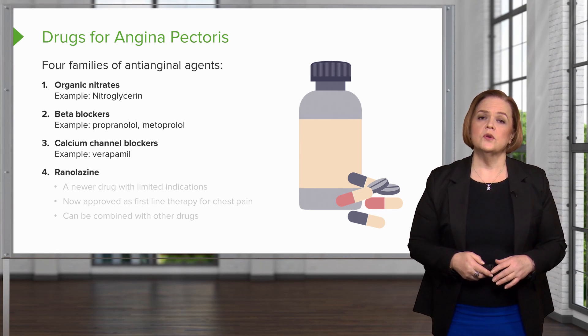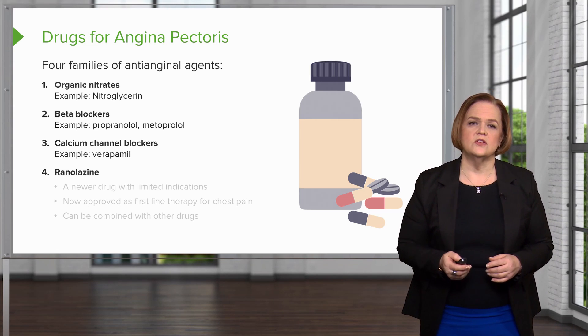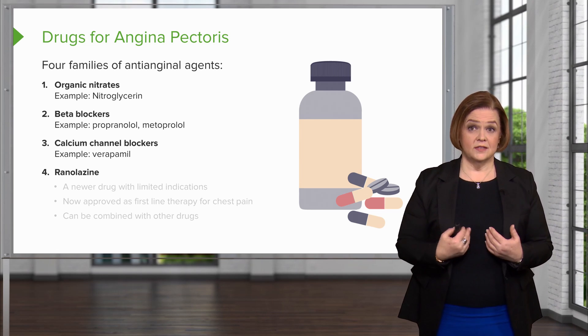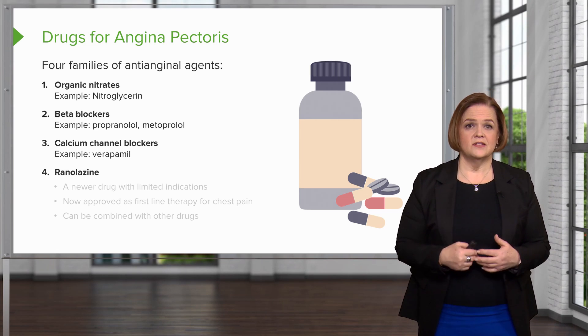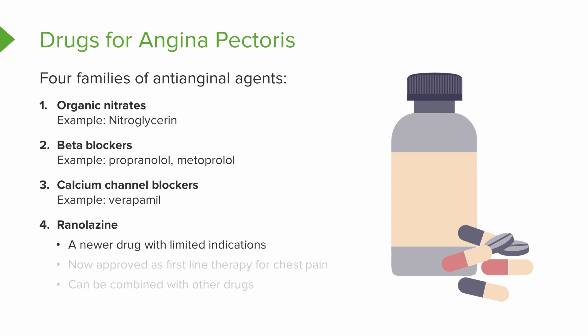The fourth group may actually be the newest to you because it's the newest to us — ranolazine. This is a newer drug with some limited indications, but when used appropriately it can be quite helpful. It's now approved as a first-line therapy for chest pain and is moving up in the ranks. We usually combine it with other drugs.